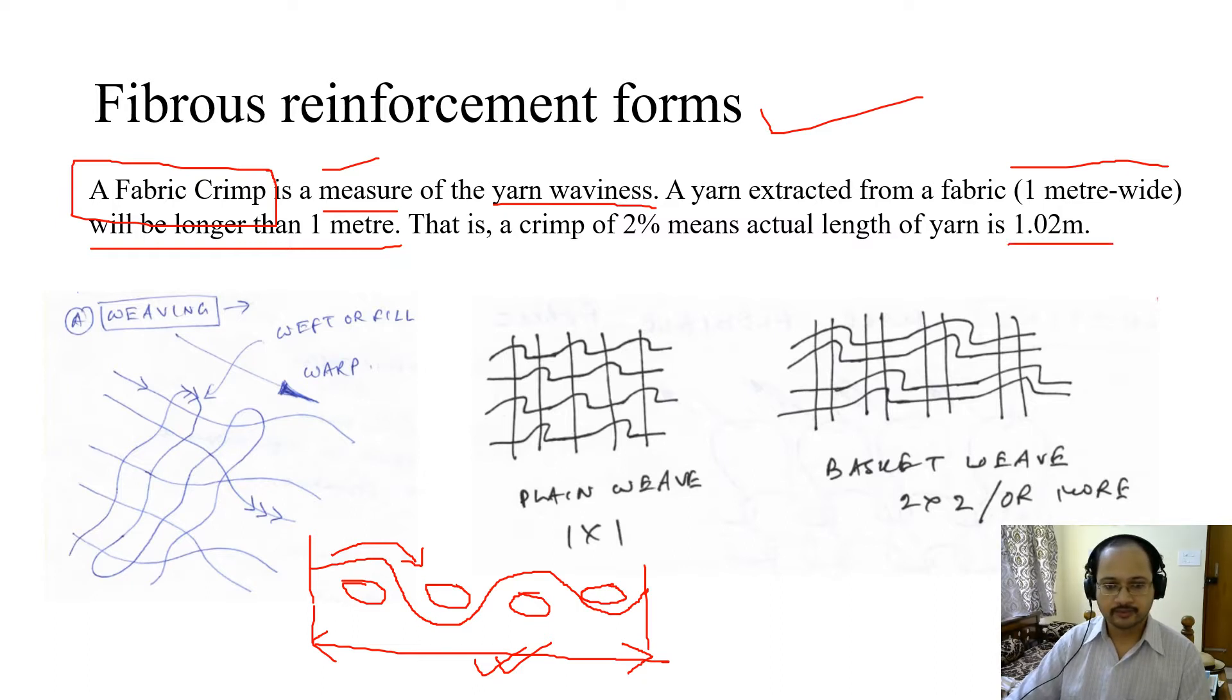These are typically in the production direction called the warp direction, and there is weaving in the transverse direction, the weft direction. This is plain weave, which is one by one, because each one has an alternating up and down interlacing pattern. There is basket weave, which is 2 by 2 weave, or it can be even more.